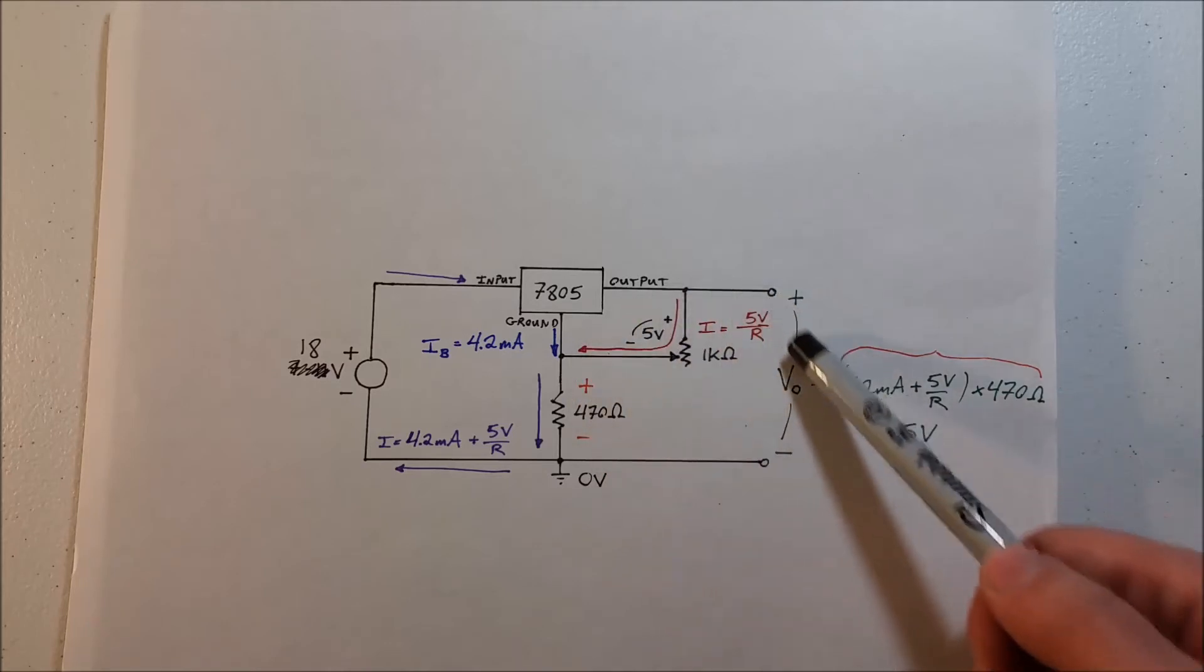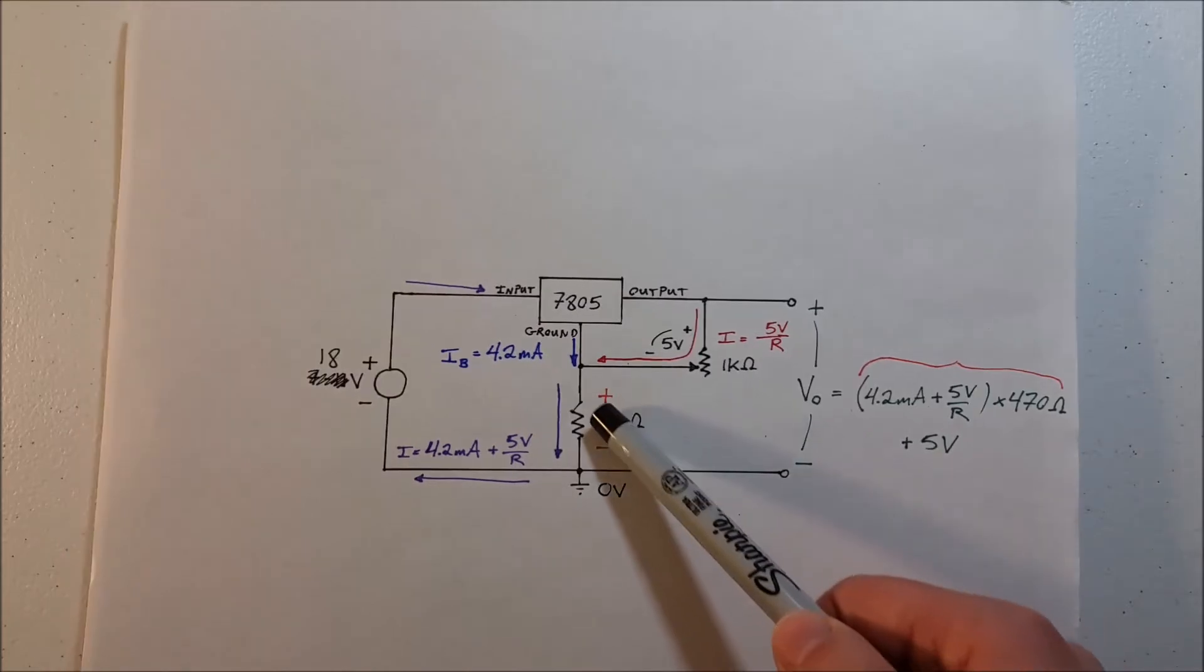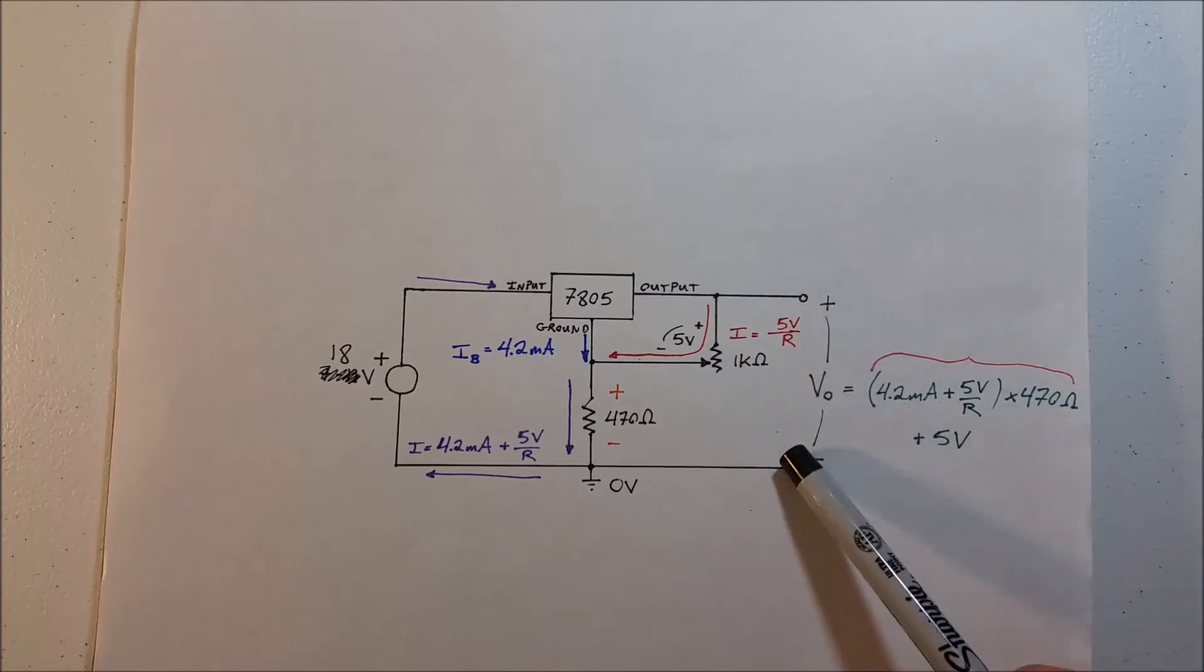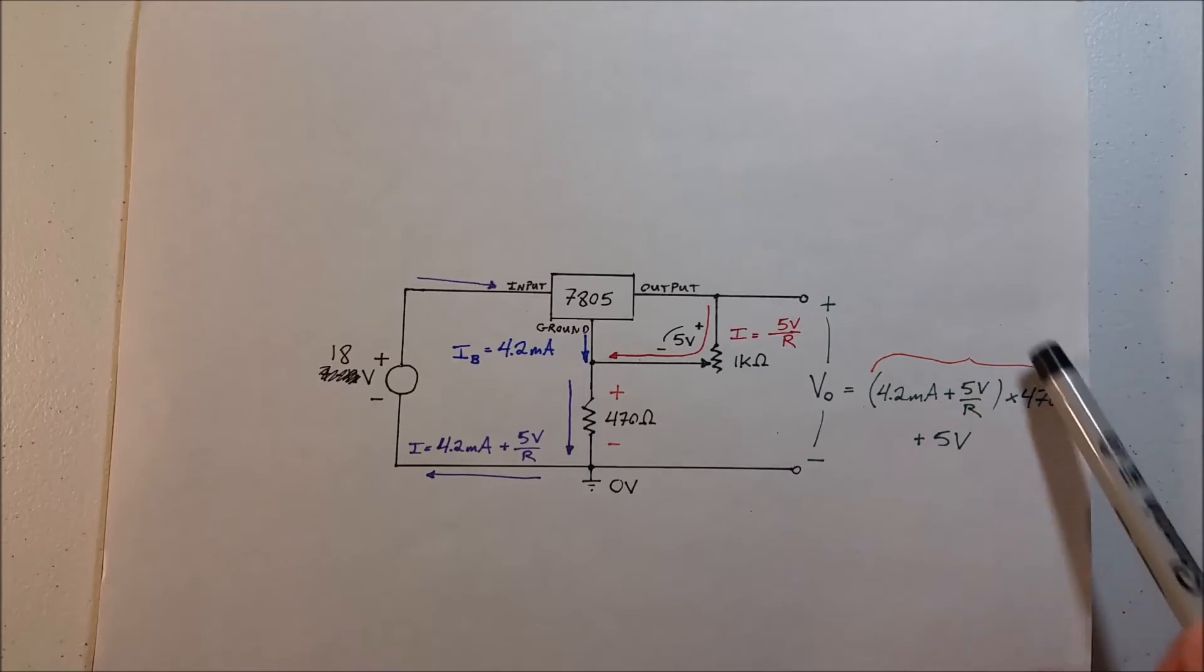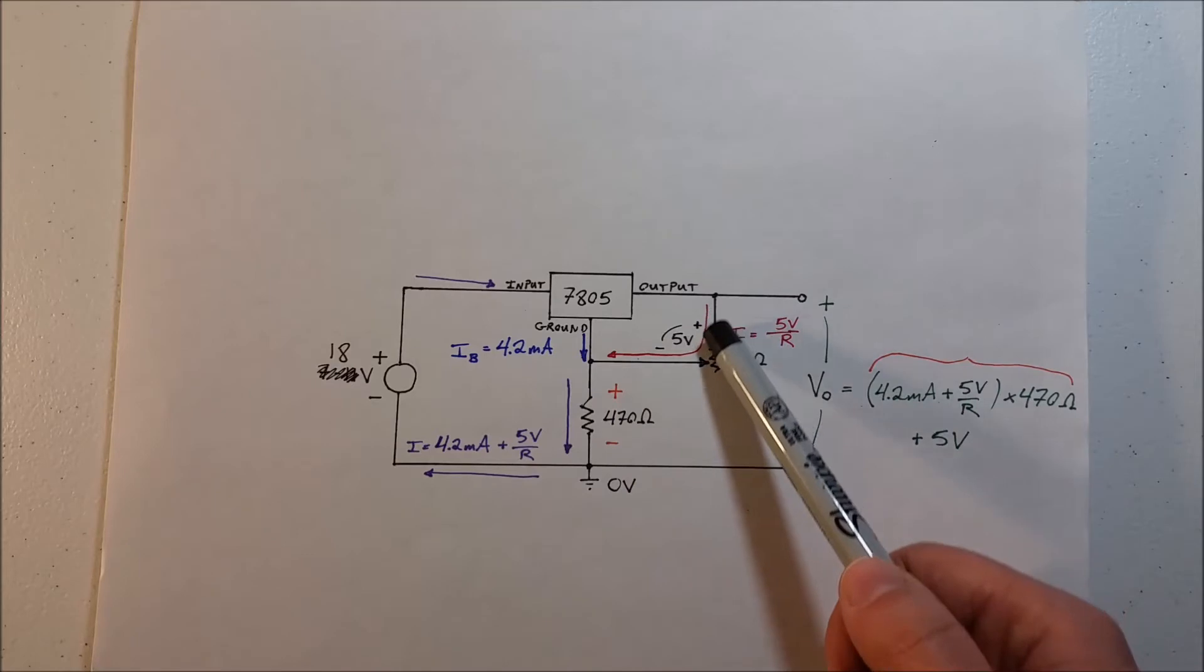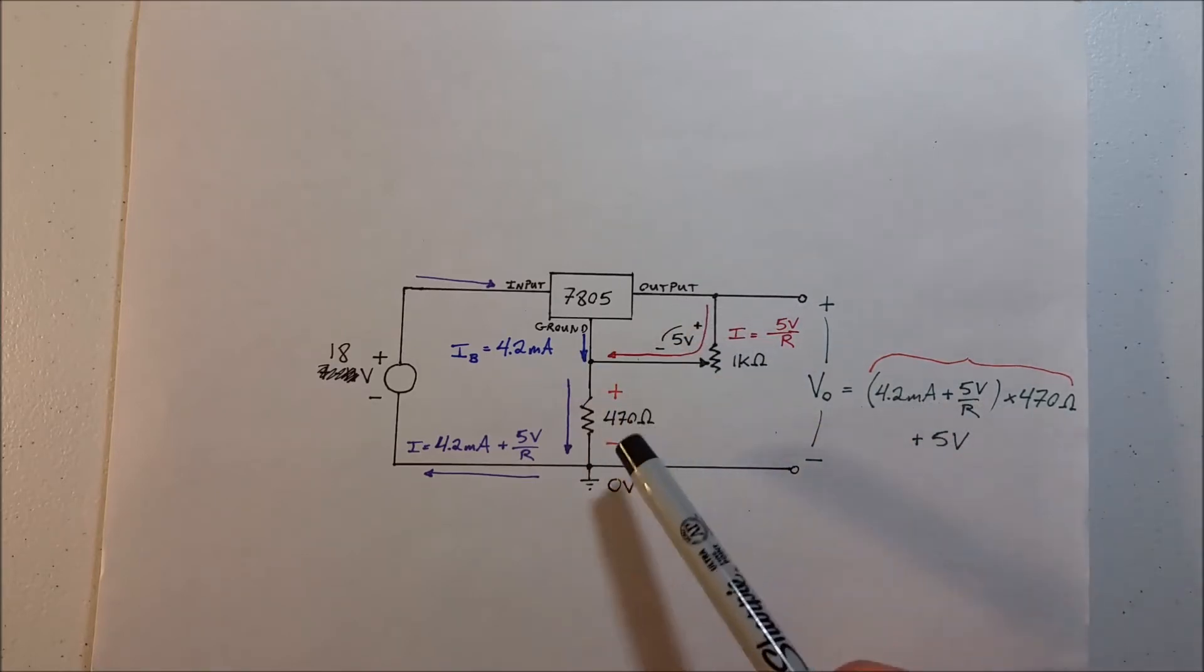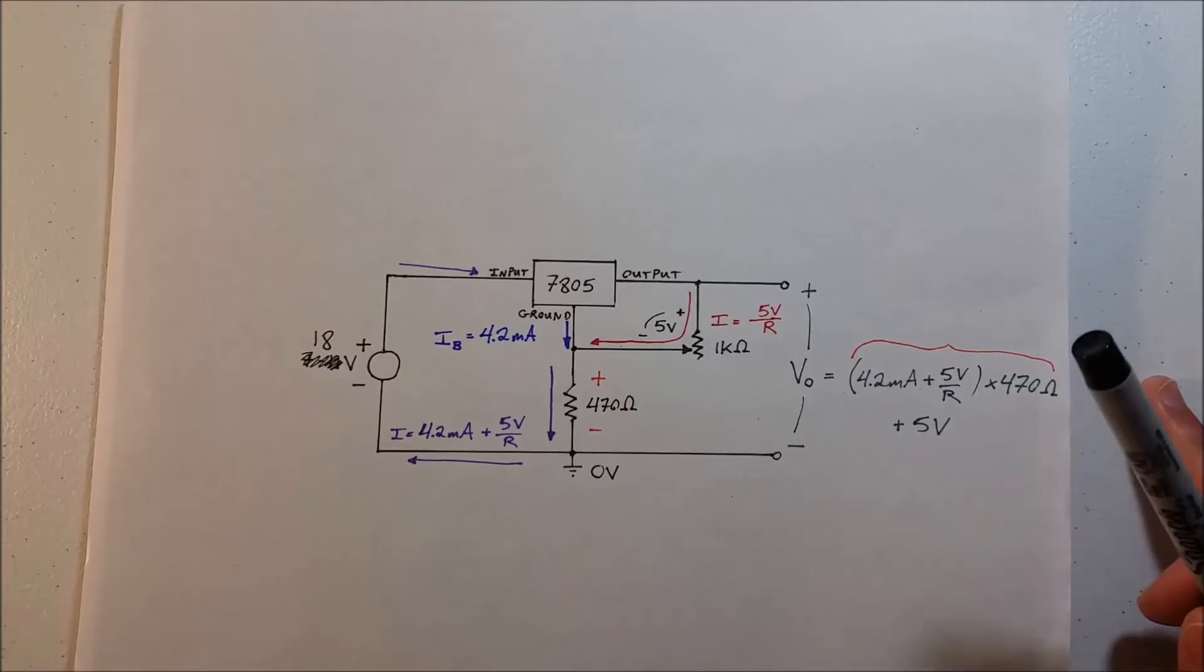Now how can we use this information to determine where our output voltage will be? Well it's simple, we use KVL. So if we go in a loop here we have the voltage dropped across this resistor plus 5 volts is our output voltage. And I wrote that equation right here. The voltage across our resistor, I put the orange bracket around it, is 4.2 milliamps, our bias current, plus 5 volts divided by R, the current flowing through the potentiometer, multiplied by 470 ohms. And of course I ran out of room so I wrote the 5 volts right here that is dropped across this resistor. So that's your output voltage, simple, nothing crazy here.